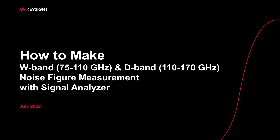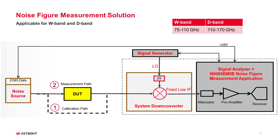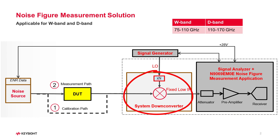This video introduces how to make W-Band and D-Band noise figure measurements using the Keysight X-Series Signal Analyzer and N9069 EM0E noise figure measurement application. The new noise figure measurement solution includes the N9069 EM0E application running on the X-Series Signal Analyzer, System Down Converter, Noise Source, and Microwave Signal Generator SLO.